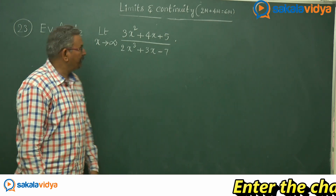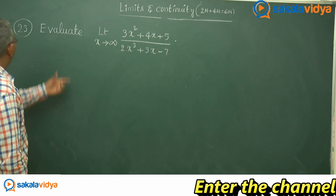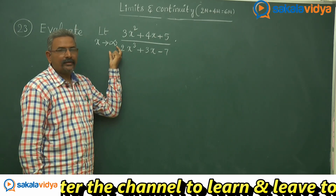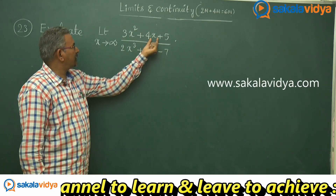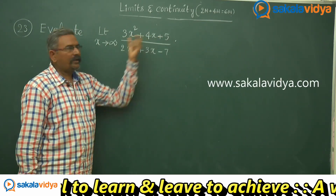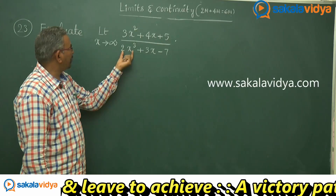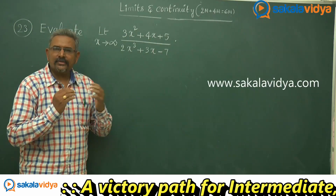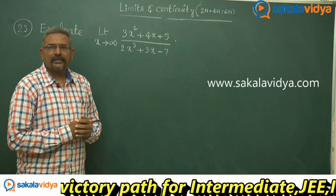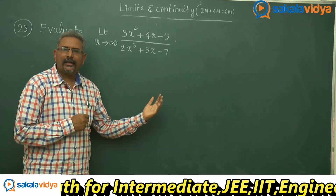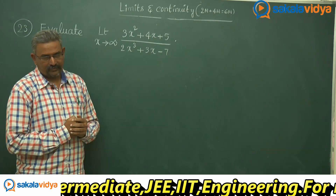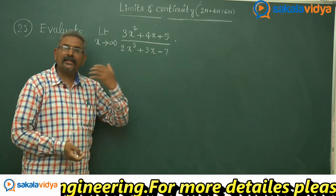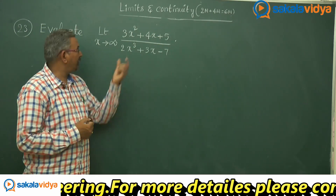Let us solve one more problem. Evaluate limit x tends to infinity of 3x squared plus 4x plus 5, divided by 2x cube plus 3x minus 7. Let us observe the degree of the numerator and the degree of the denominator. The degree of the numerator is x square whereas the degree of the denominator is x cube.